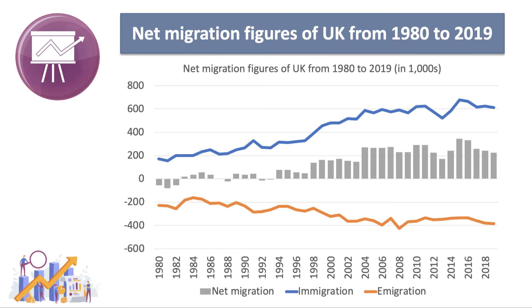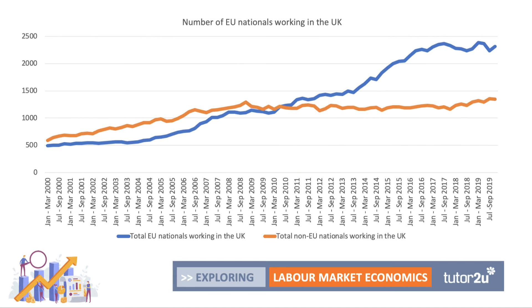That was just a year before the EU Brexit referendum. Since then, net migration into the UK has declined, dropping to around 225,000 in 2019 according to the most recent data.